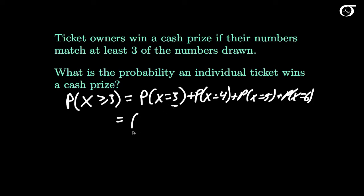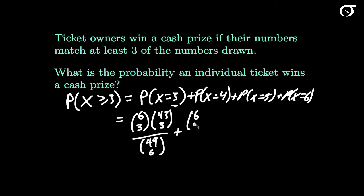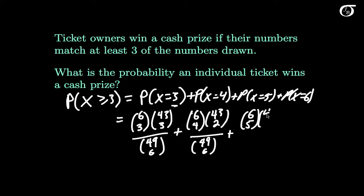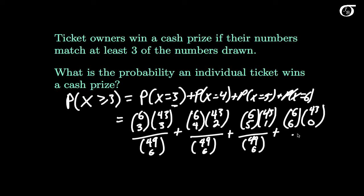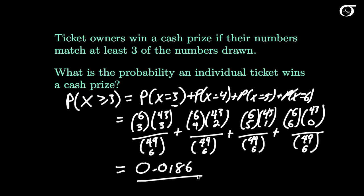To get exactly 3 correct: from our 6 numbers, 3 must be chosen, and from the 43 failures, 3 must be chosen, over 49 choose 6. For exactly 4: 6 choose 4 times 43 choose 2, over 49 choose 6. For exactly 5: 6 choose 5 times 43 choose 1, over 49 choose 6. For exactly 6: 6 choose 6 times 43 choose 0, over 49 choose 6. Working that out, we get a probability of 0.0186.